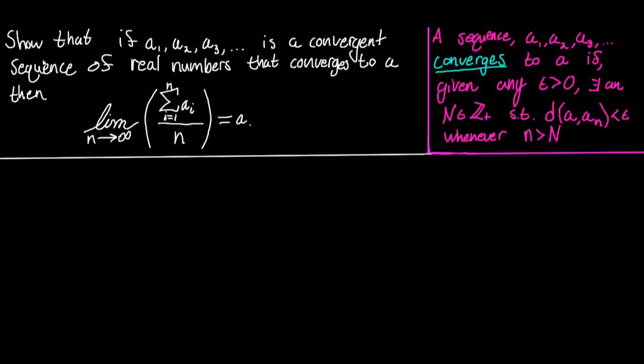Show that if a₁, a₂, a₃, and so on is a convergent sequence of real numbers that converges to a, then the limit as n goes to infinity of the sum of all of these aᵢ from i equals 1 to n, all over n, is equal to a.